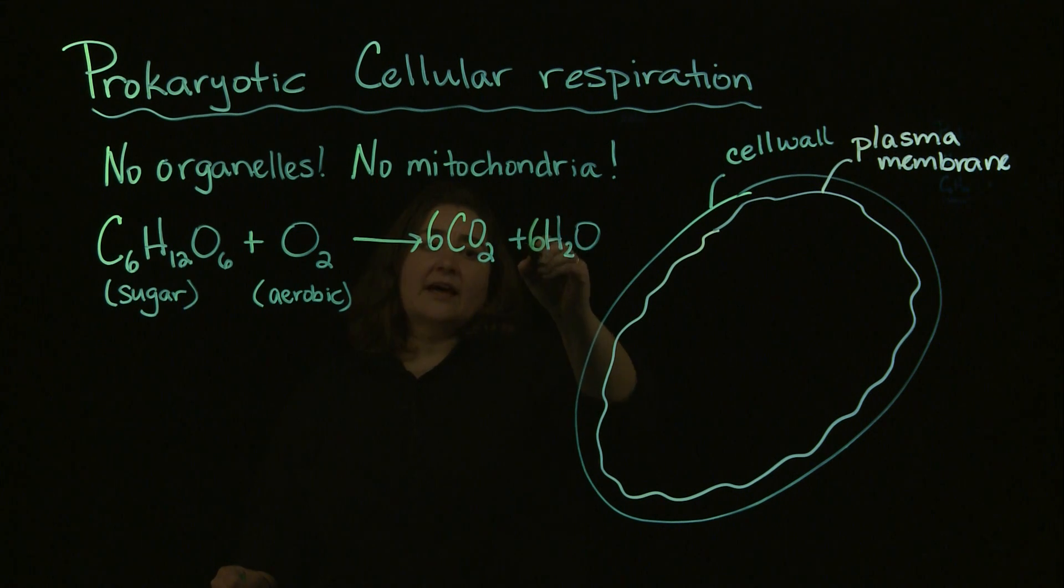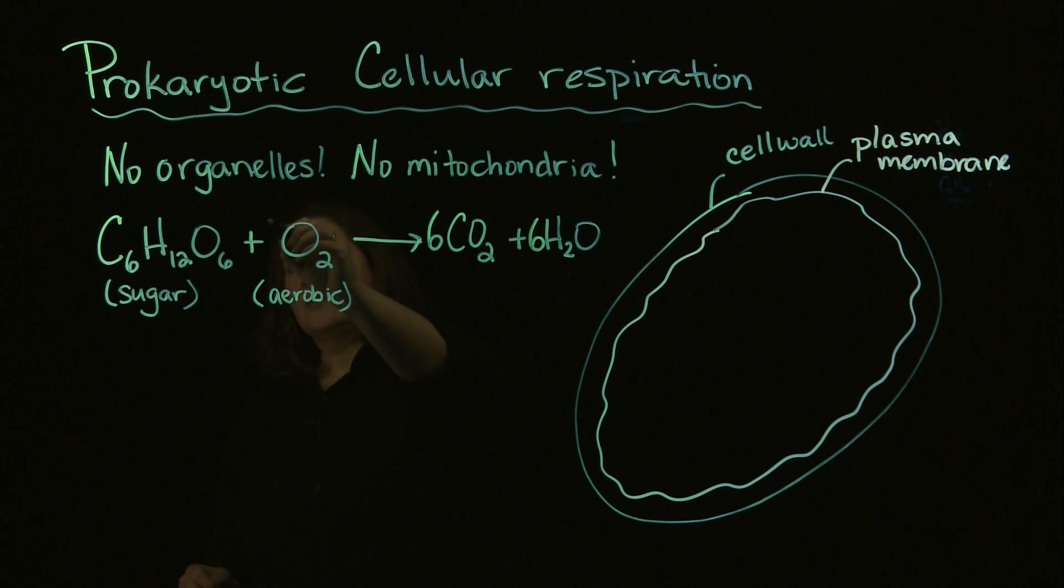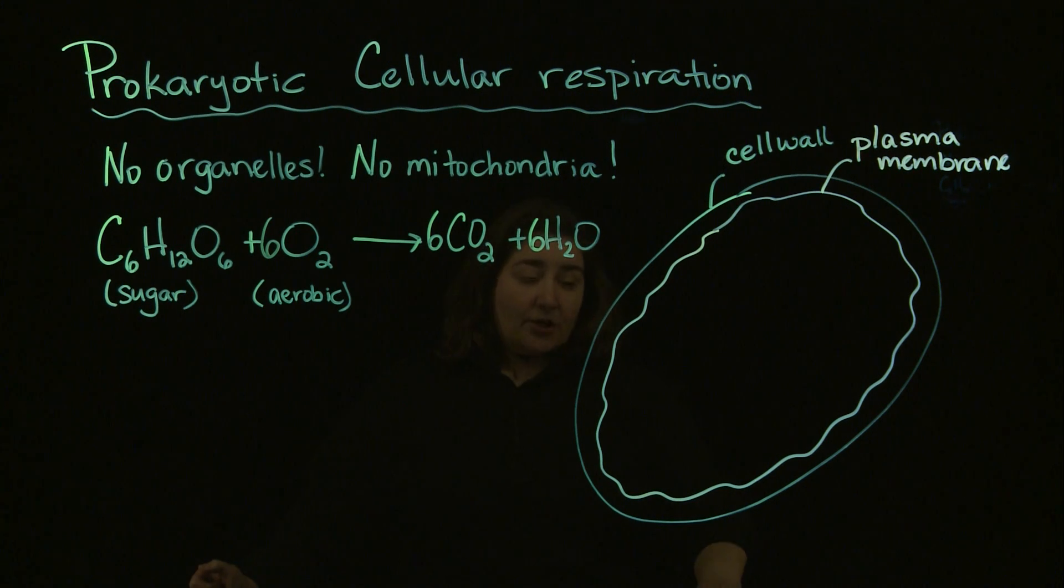And in terms of balancing that, then we've got 12 hydrogens here. So we put a six here. We've now got 12 hydrogens here. But we've also altered the number of oxygens by doing that. So if we add another six in front of the oxygen here, that balances everything out. In terms of prokaryotic cellular respiration.